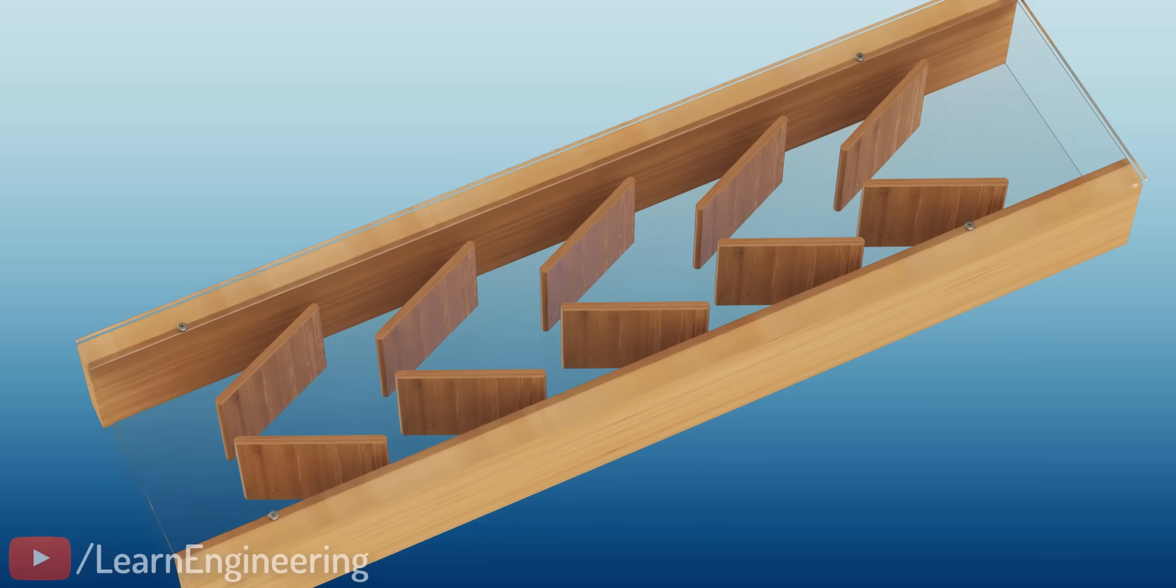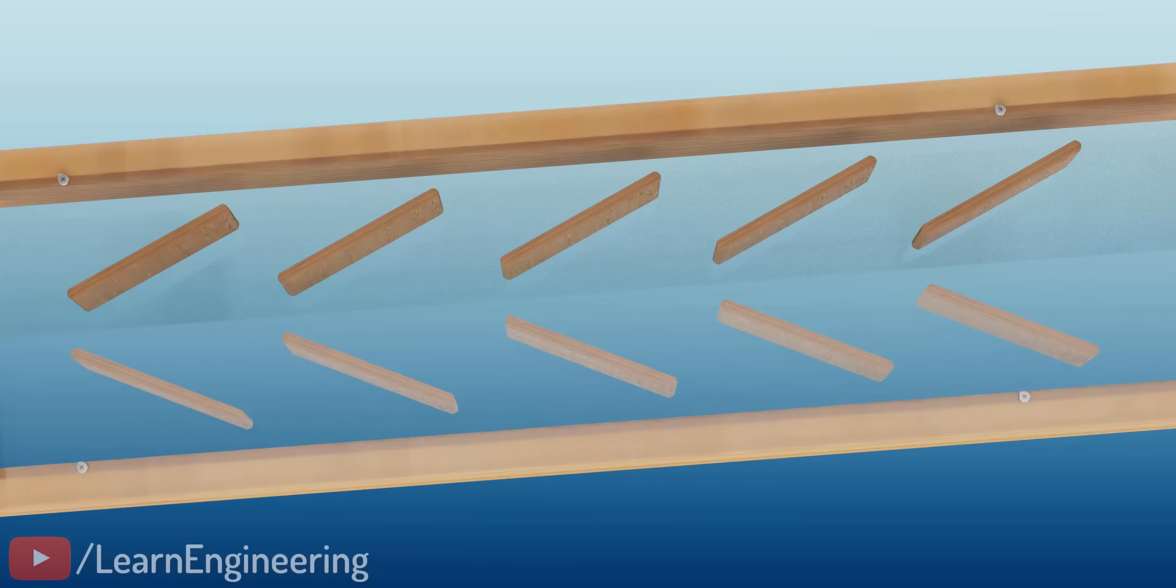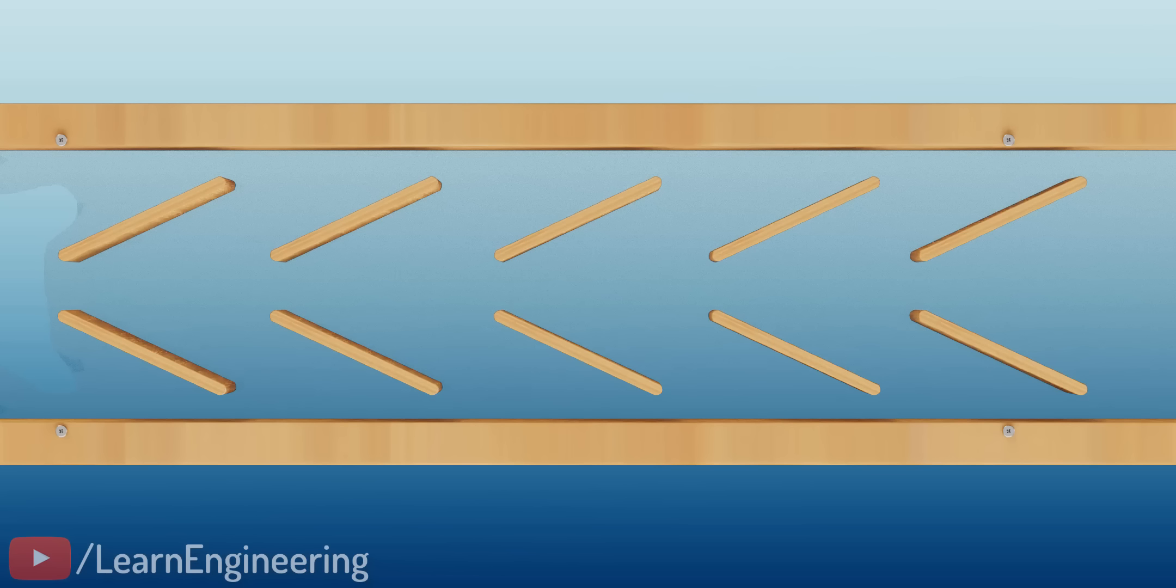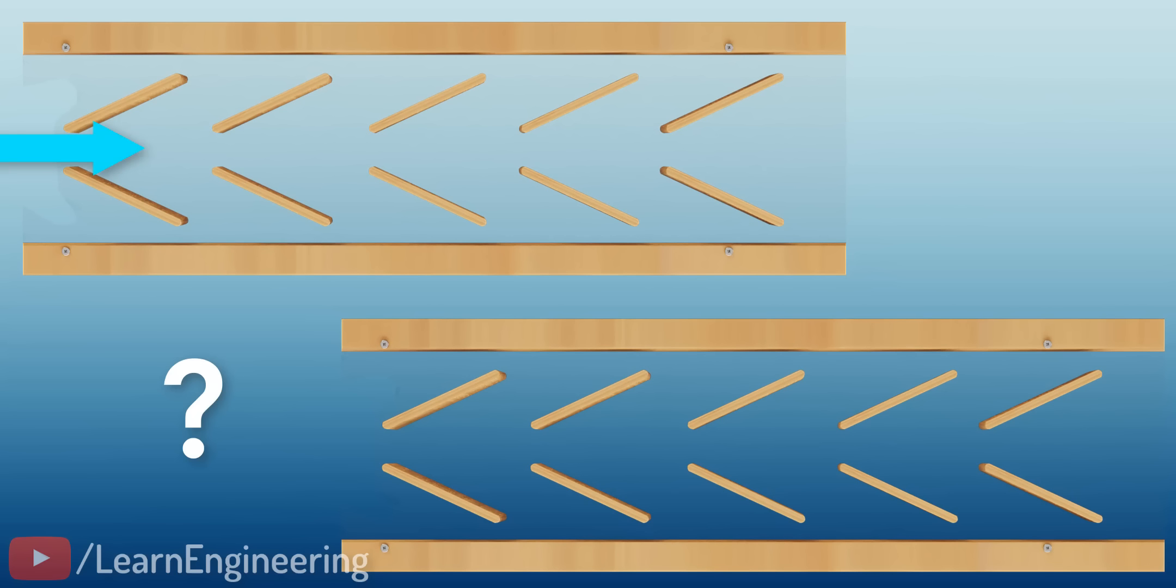Now, take the second case. Here, the obstacles are added at an angle. Here is a question for you. In which direction will the fluid find it easier to flow? Left to right or right to left? Your intuition says that the right-to-left flow is easier, doesn't it? Why is this so?